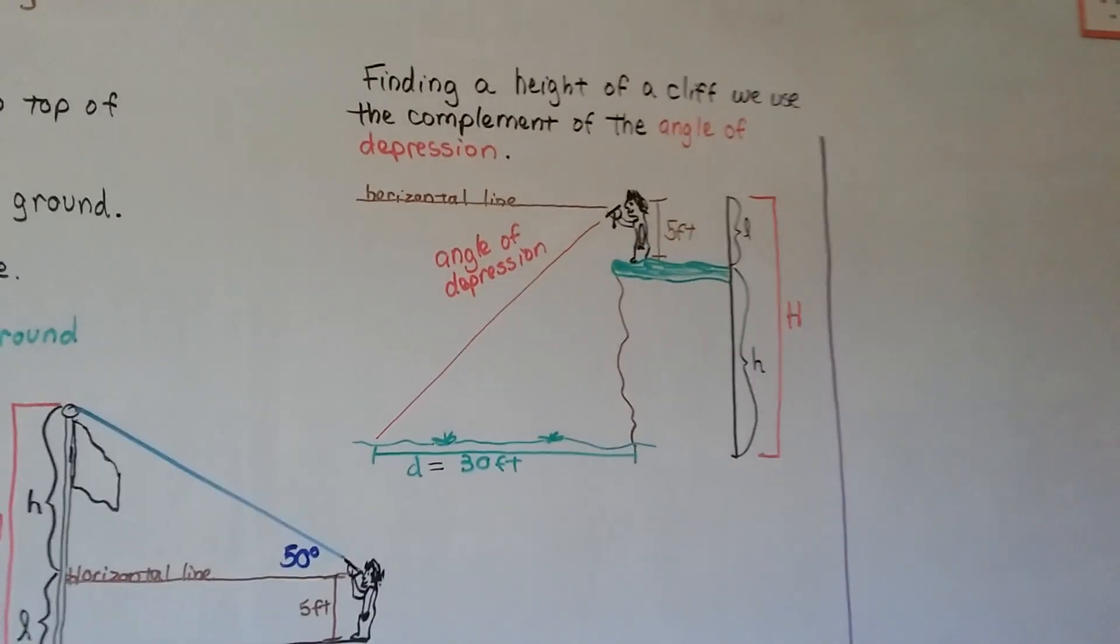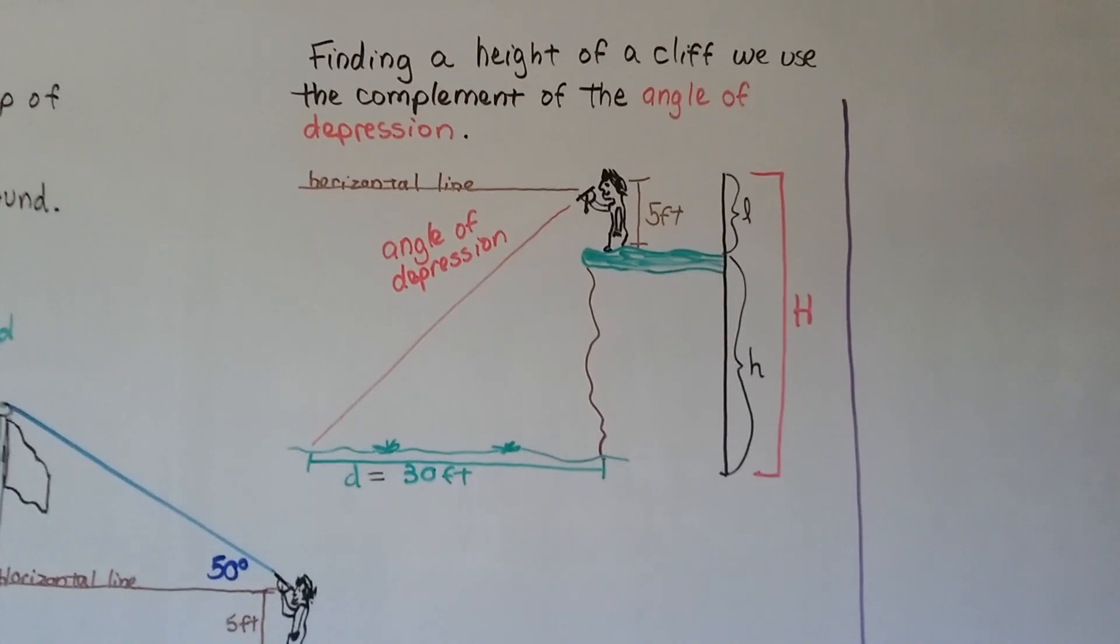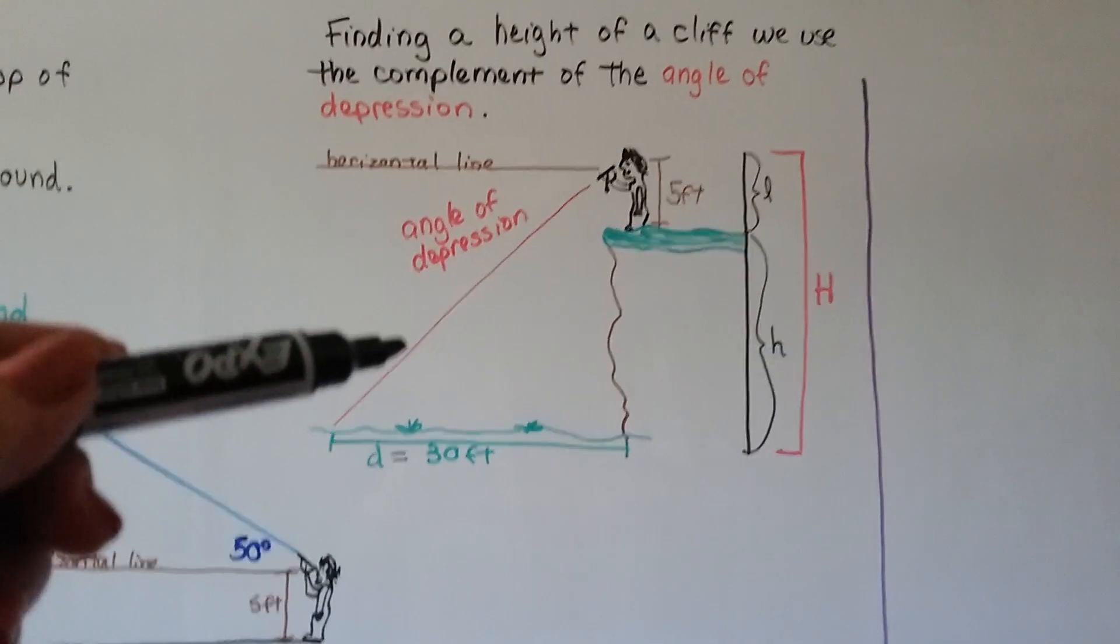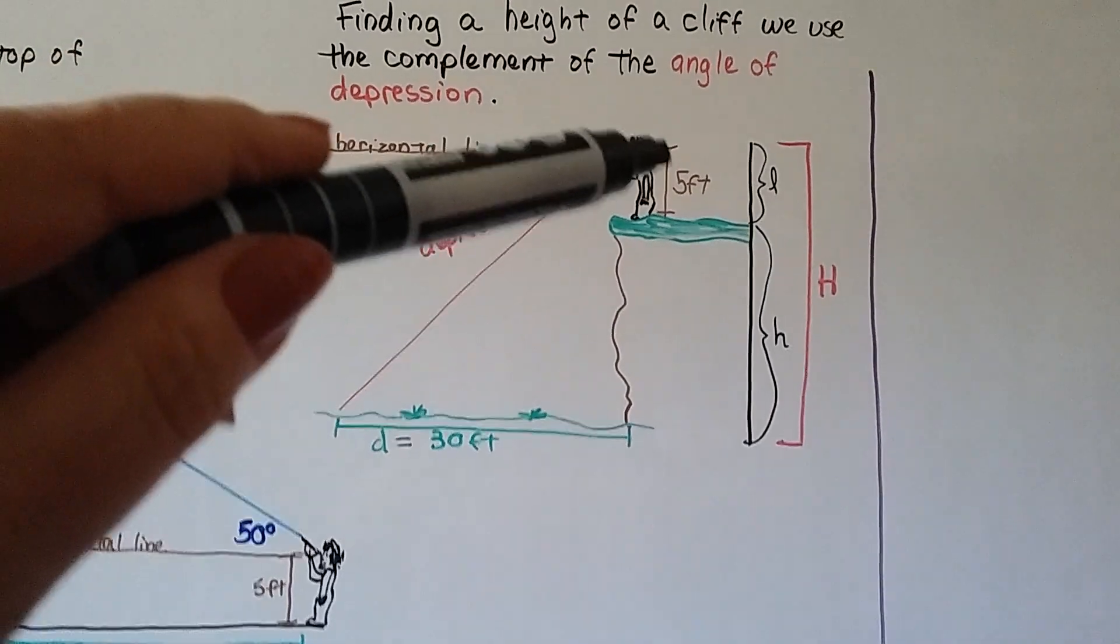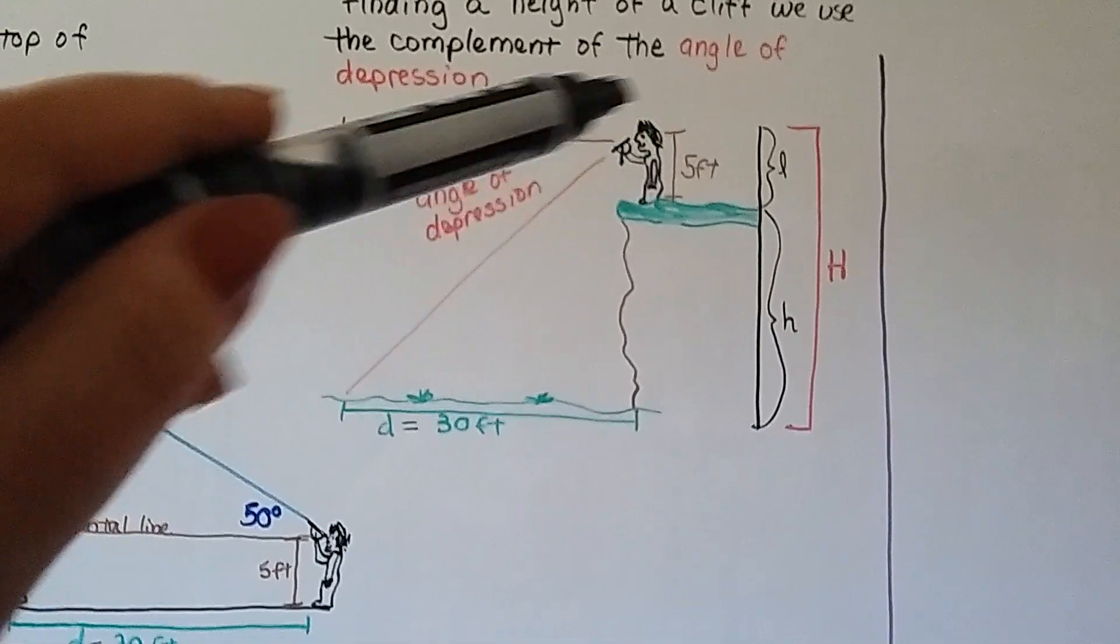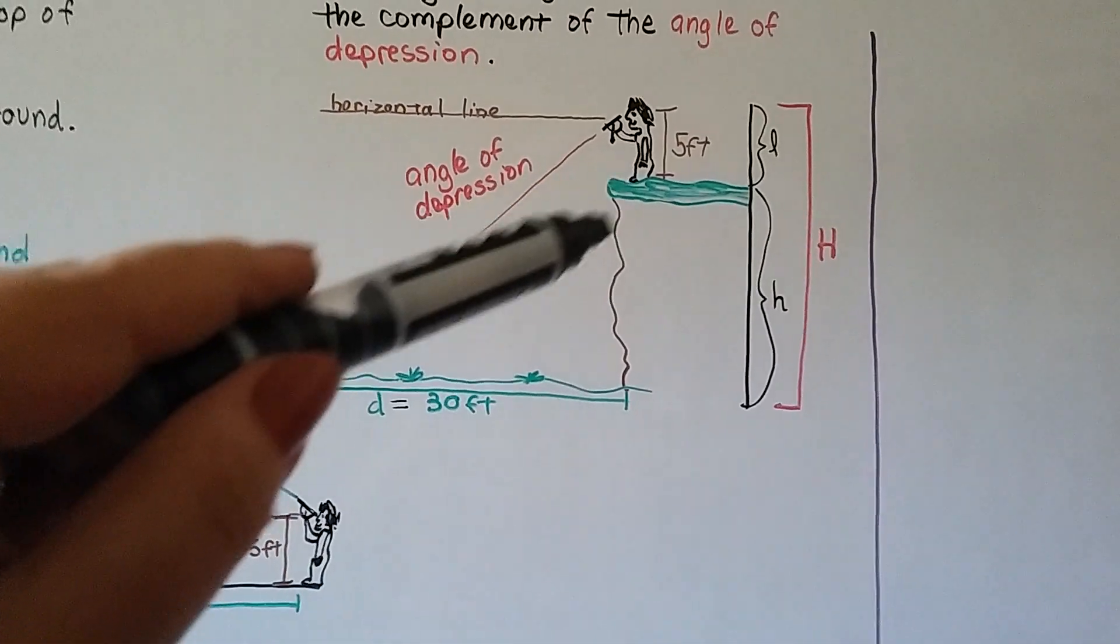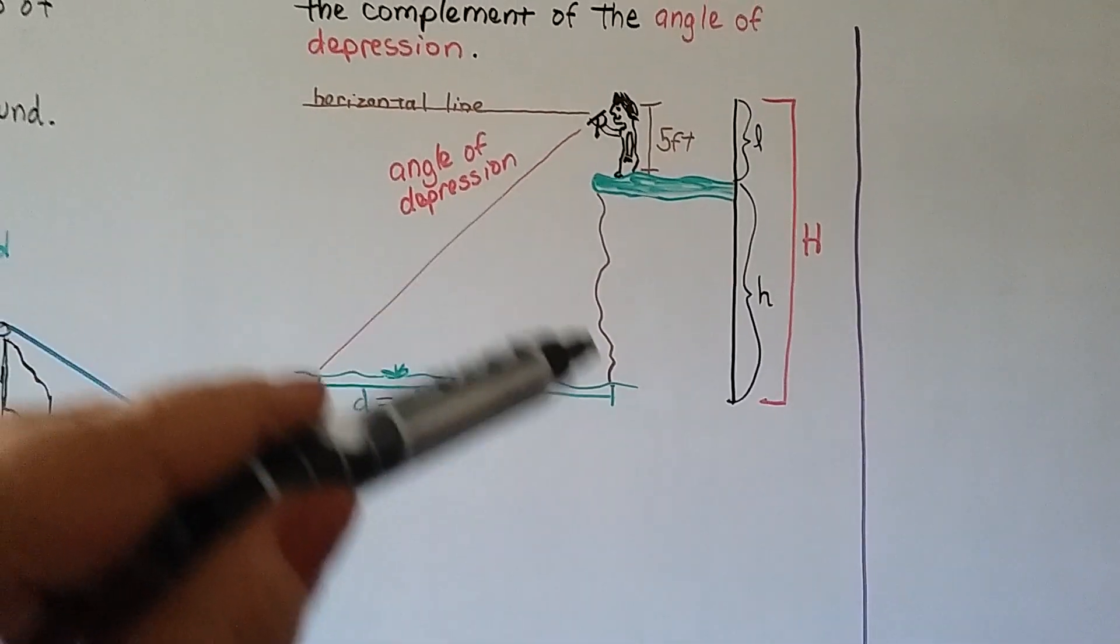And finding the height of a cliff, we use the complement of the angle of depression. So this is the exact same thing. The only difference is we're going to be subtracting this 5 feet to find the height for the lowercase h of the cliff.